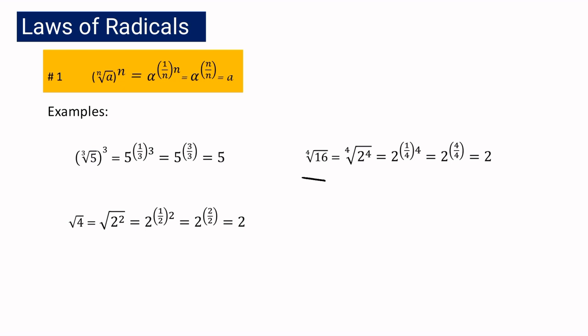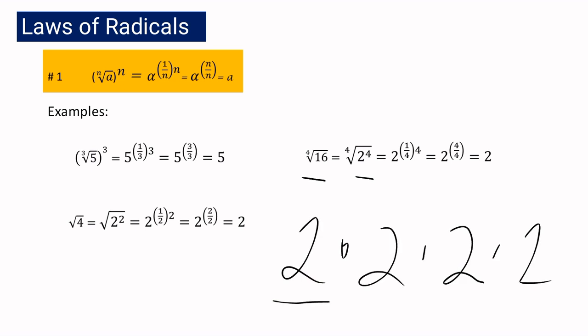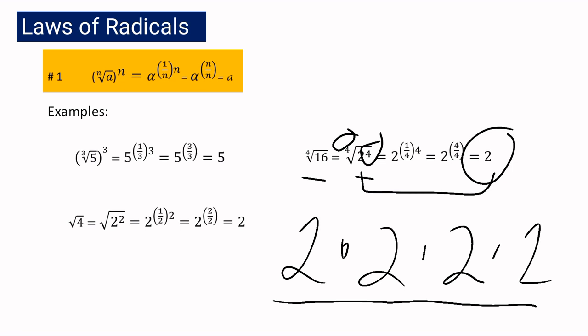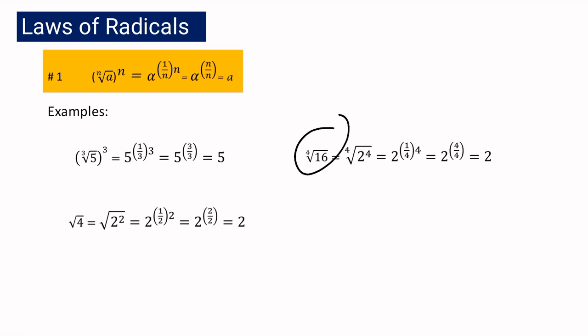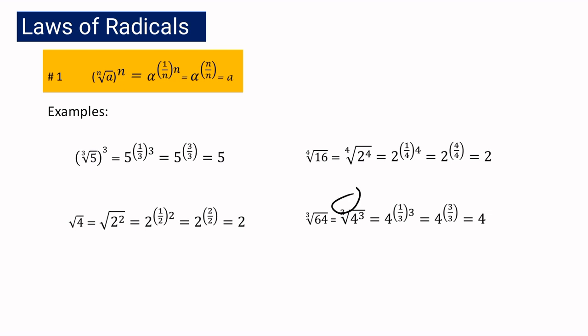Let's have a few more examples. If we have the 4th root of 16, we can express 16 as 2 to the 4th, because 2 times 2 times 2 times 2 equals 16. If you have the same index and the same exponent, then the answer will be the radicand itself, which is 2. That is why the 4th root of 16 is equal to 2. For our last example of the first law, if you have the cube root of 64, we can express 64 as 4 cubed because 4 times 4 times 4 is 64. If you have the same index and the same exponent, the answer will be 4. So cube root of 64 is equal to 4.